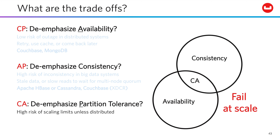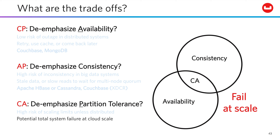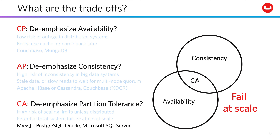Last, what happens if you de-emphasize partition tolerance? With this approach, you're not talking about elastic, scalable software, but one big box. There are real risks of scaling limitations with non-distributed systems — potentially total system failure at cloud scale. All the old relational systems fall into this category.